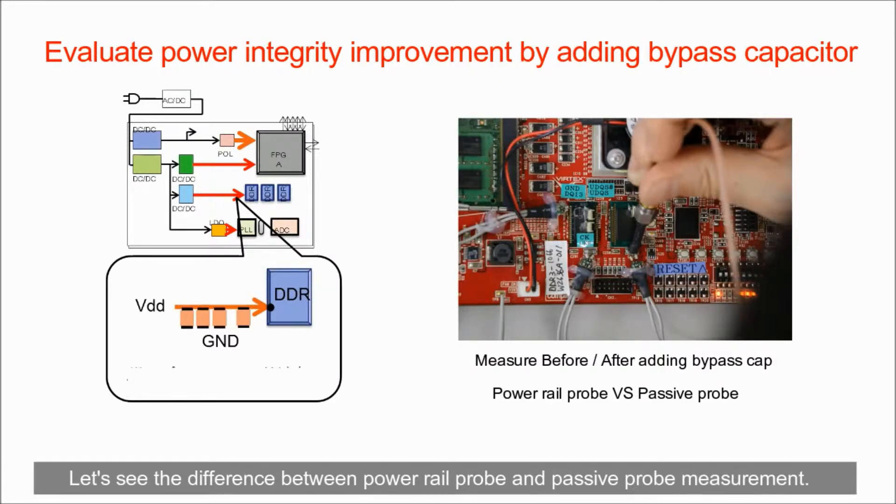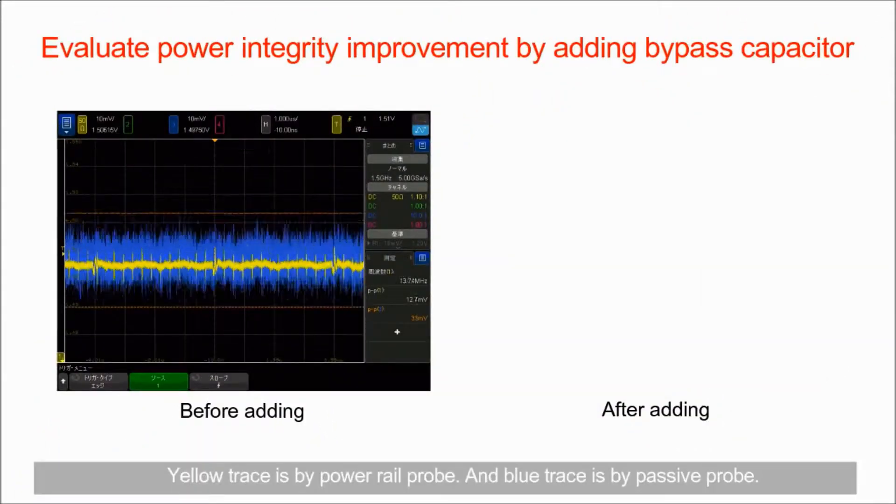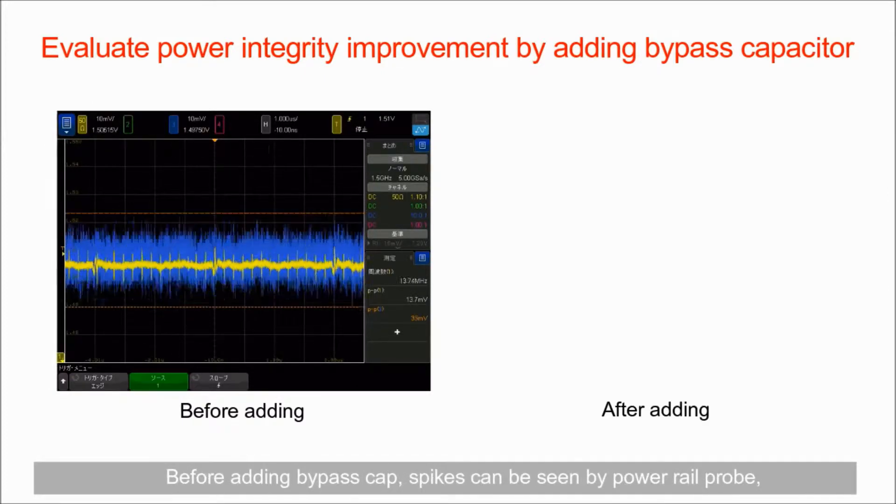Let's see the difference between PowerRail probe and passive probe measurement. Yellow trace is by PowerRail probe and blue trace is by passive probe. Before adding bypass capacitor, spikes can be seen by PowerRail probe.